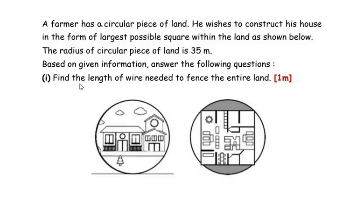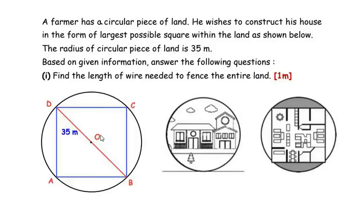The first sub-question is: find the length of the wire needed to fence the entire land. Let us draw a rough figure. A farmer has a circular piece of land, and ABCD represents the largest possible square on this land. We have joined points B and D, and O represents the center of the circle, so OD becomes the radius, which is given as 35 meters. In the first question, we have to find the length of wire needed to fence the entire land.